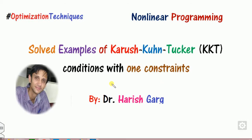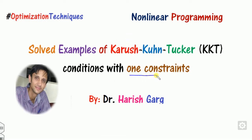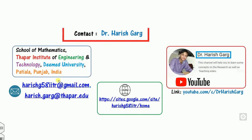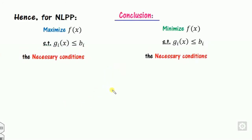Welcome to this class on optimization techniques. Today we will discuss how we can solve the KKT conditions when there is only one constraint, solving the nonlinear programming problem. I am Dr. Garth, working in the School of Mathematics, Thapa Institute, India. In the last lecture we discussed the necessary and sufficient conditions for the nonlinear programming problem, called the KKT condition.